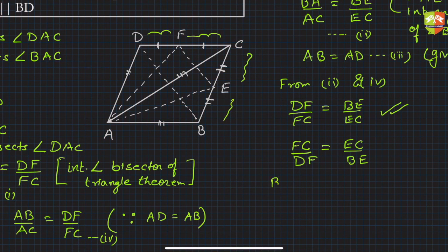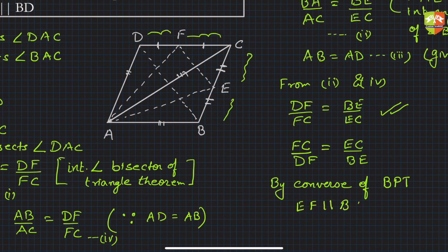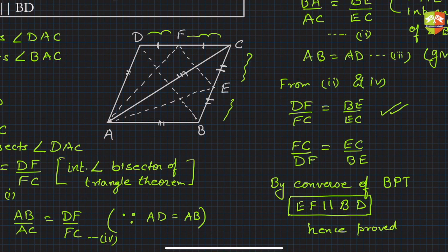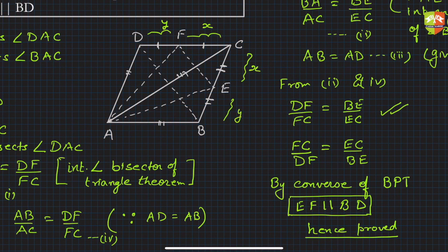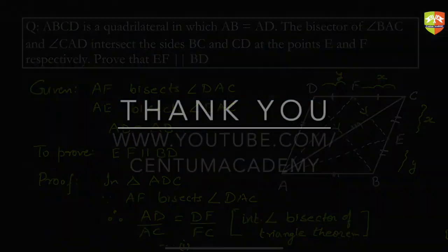By the converse of the Basic Proportionality Theorem — also known as Thales' Theorem — since line EF divides the two sides CD and CB of triangle CDB in equal ratios, EF is parallel to BD. Hence proved. The converse of BPT states that if a line divides two sides of a triangle in equal ratios, it is parallel to the third side.